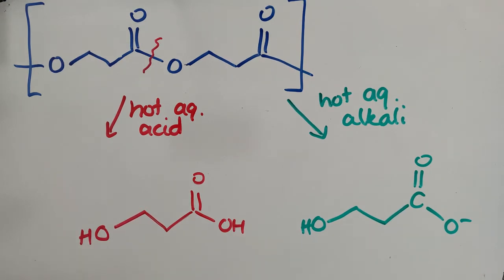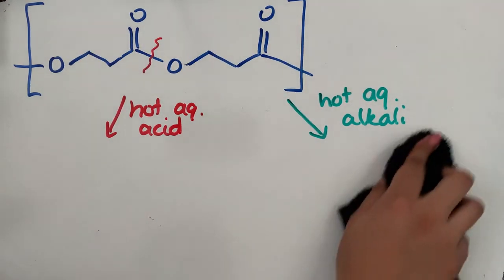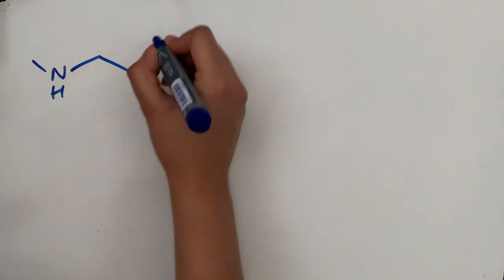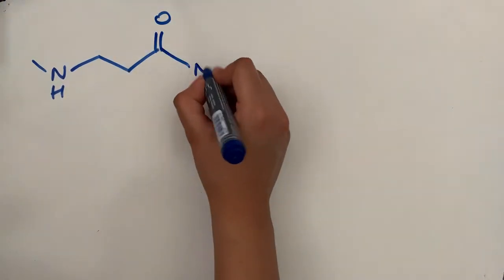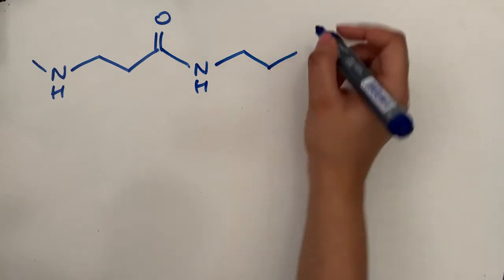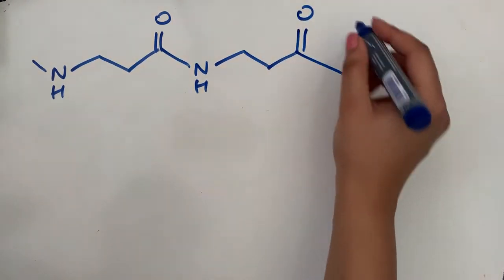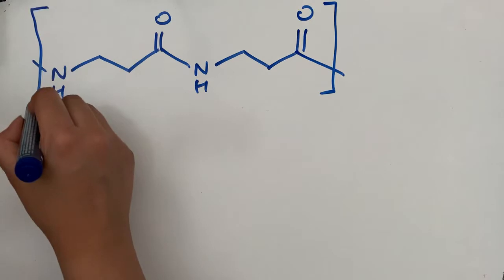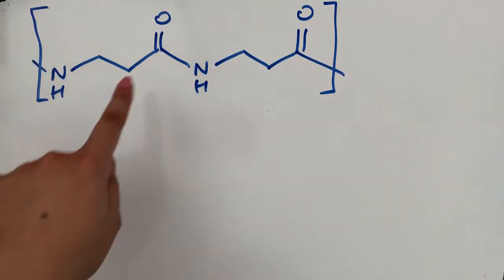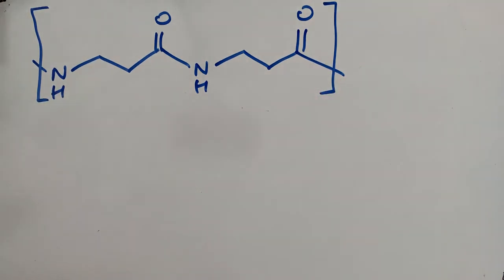Let's now move on to a polyamide. I'm just going to draw out part of this polyamide. We know it's a polyamide because you've got the amide linkage here, and as you can see there'd be an amide linkage at either end.